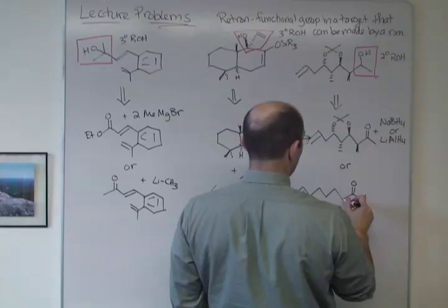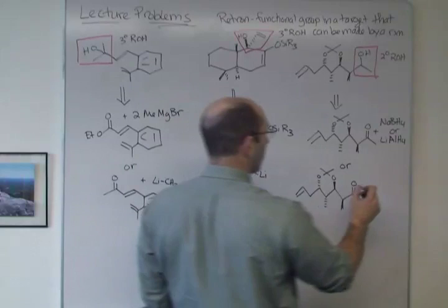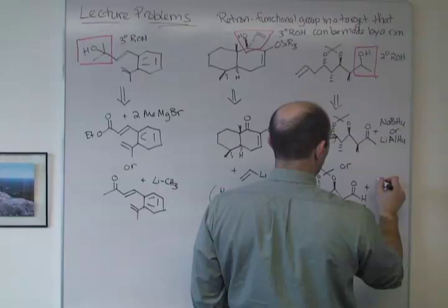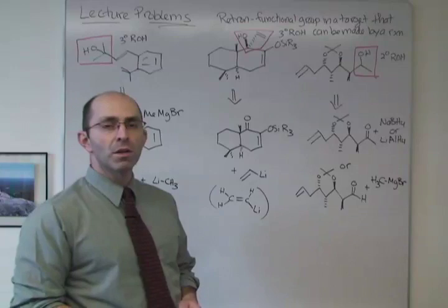Or we could imagine starting from an aldehyde. And if we started from an aldehyde, we'd have to add a carbon, and we could add that carbon-carbon bond by adding methyl lithium or methyl magnesium bromide. So there's our methyl Grignard reagent. And that will add to make the carbon-carbon bond that we want.